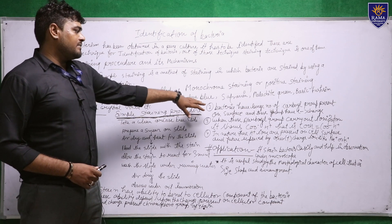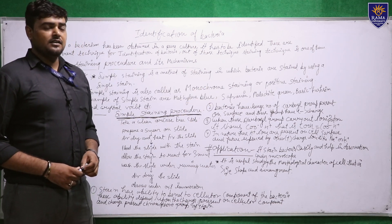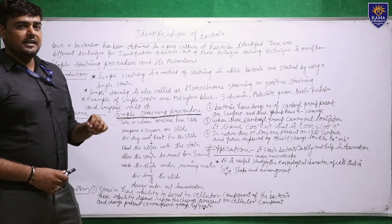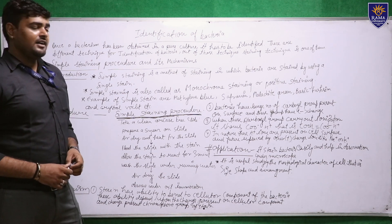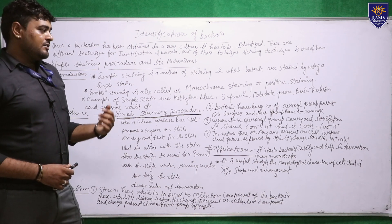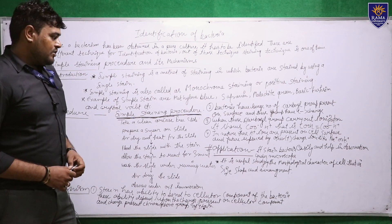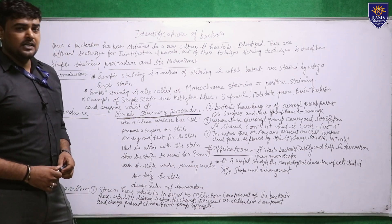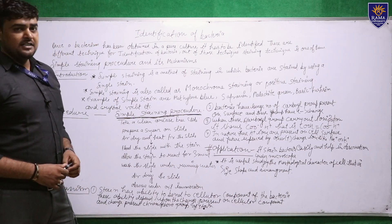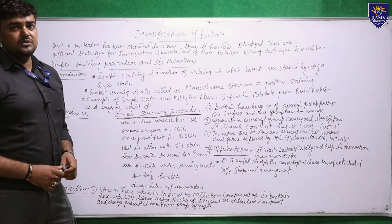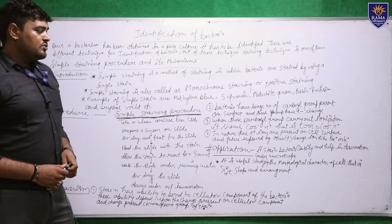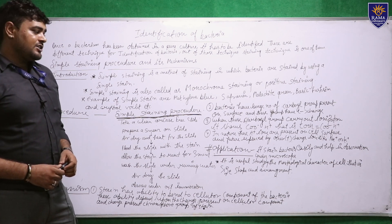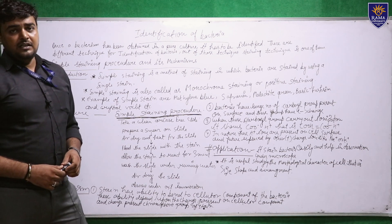When we introduce malachite green stain, which has a Cl⁻ ion and an Mg group bearing a positive charge, the Mg⁺ ion replaces the H⁺ ions on the bacterial surface, forming a bond and producing the staining. Its application is that it stains bacteria easily and helps in observation under the microscope for easy identification. It is also useful for studying morphological characters of cells, such as their shape, size, and arrangement. Thank you.